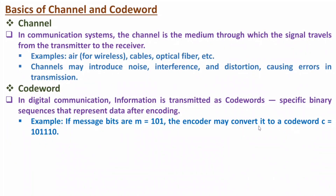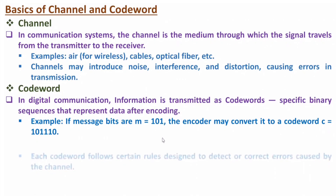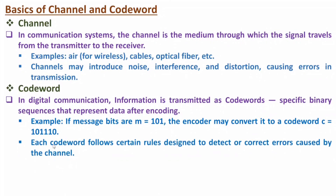As and when we receive the codeword at the receiver side, if there is an error in the codeword, then by using error correction, one can resolve the error and extract the original information. Each codeword follows certain rules that are designed to detect and correct errors caused by the channel.